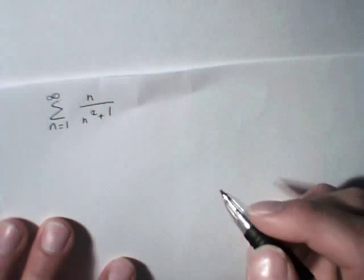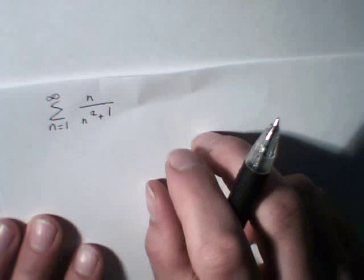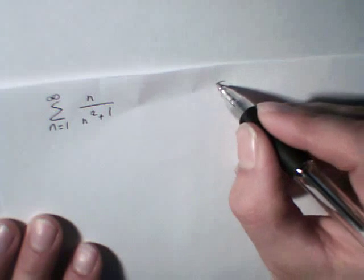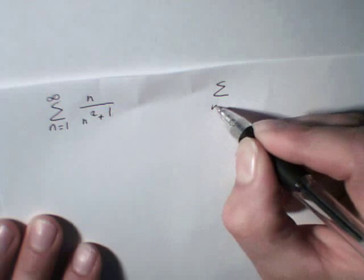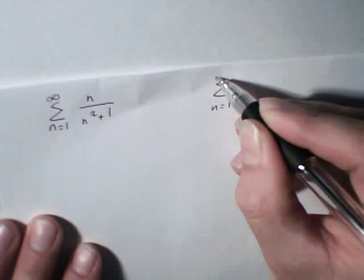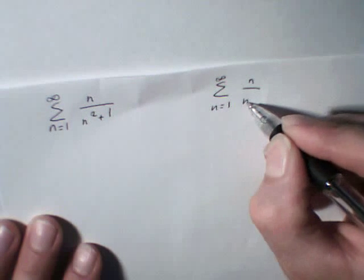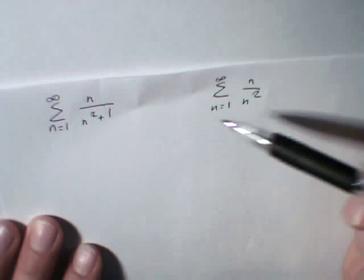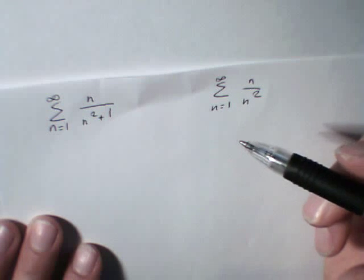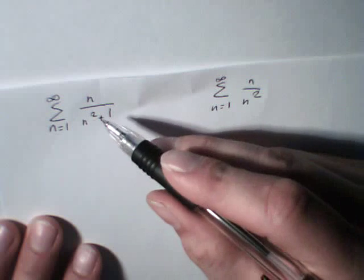Now, let me talk a little bit about a very similar series, which looks a bit the same. Let's imagine we had that series, n divided by n squared, which looks very much the same but is not the same. We've got a plus 1 there.